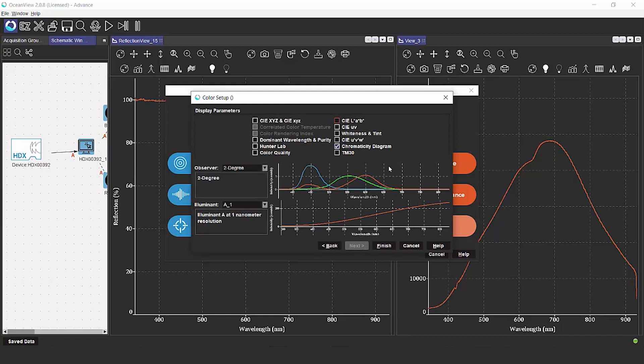We have the option, as you can see here, of choosing from several different quantitative color values that we can output in the software, as well as picking our observer and illuminant. Then we're going to click finish.